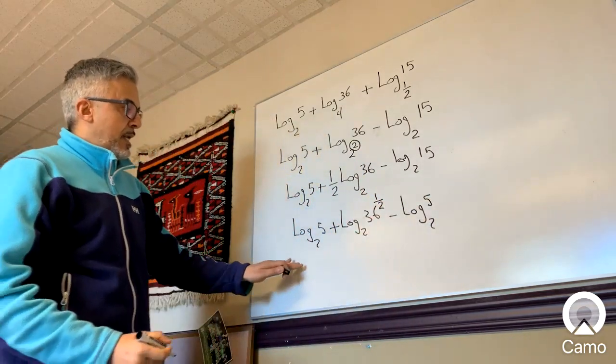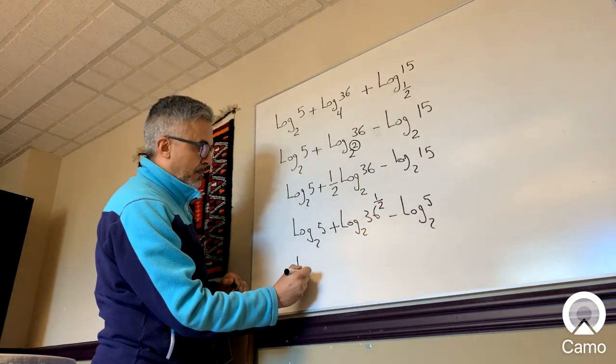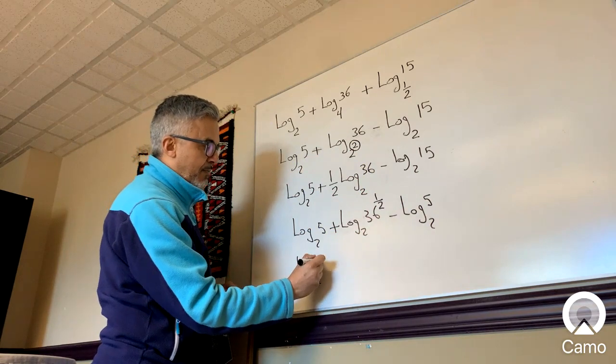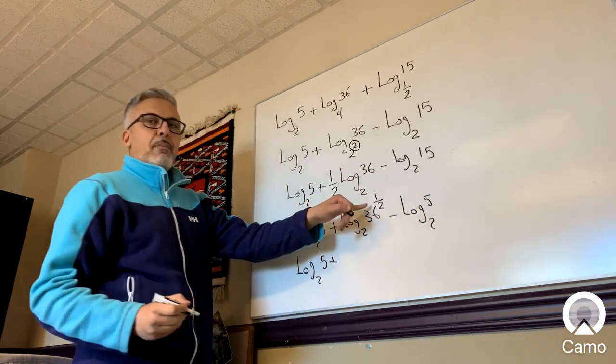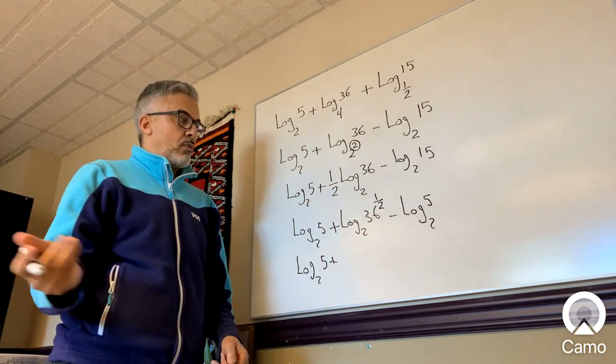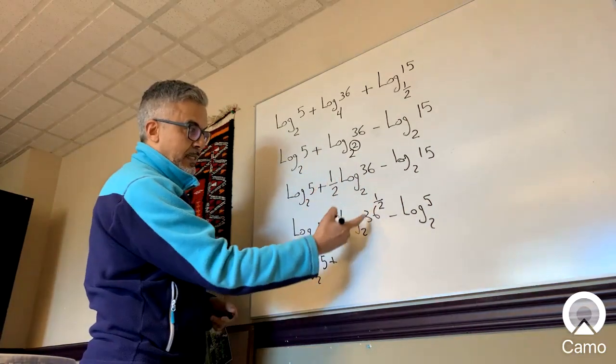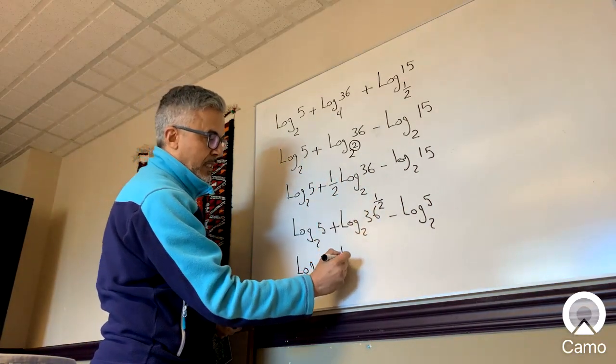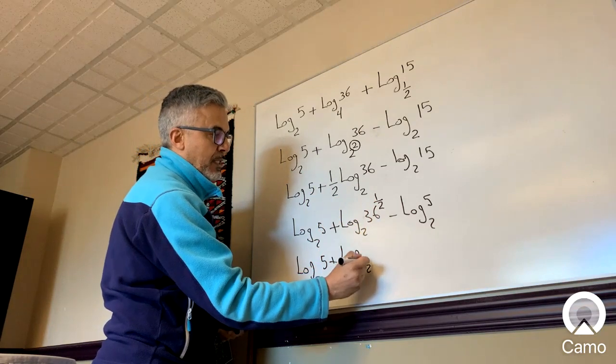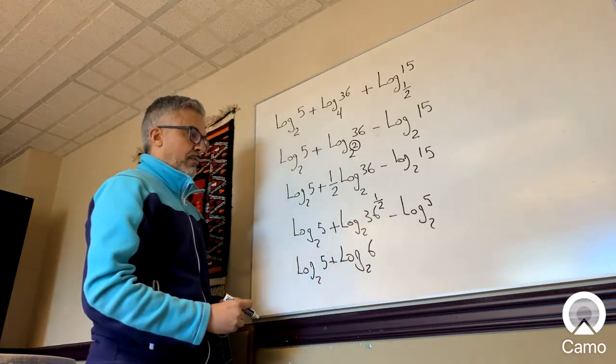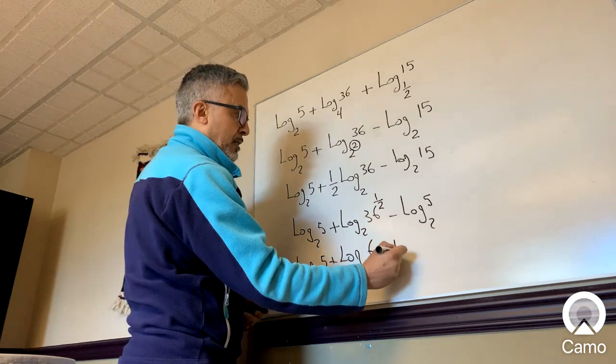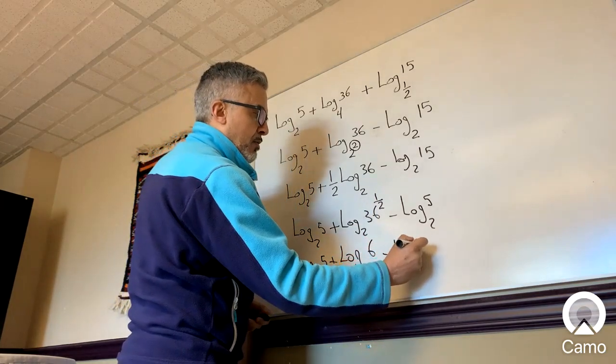So far so good. Now this becomes log base 2 of 5 plus, to the power of 1/2 is the same as the square root. So this is the same as the square root of 36, which is 6, so that becomes log base 2 of 6 minus log base 2 of 5.